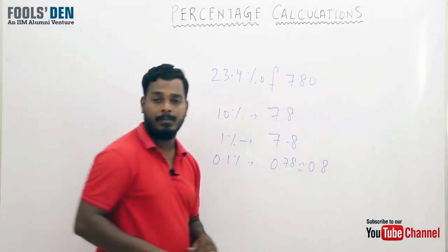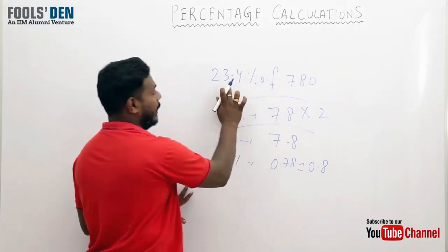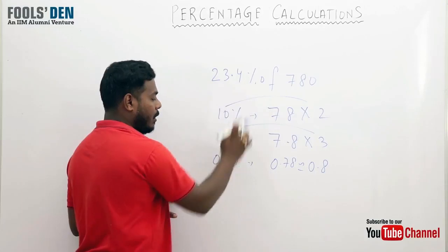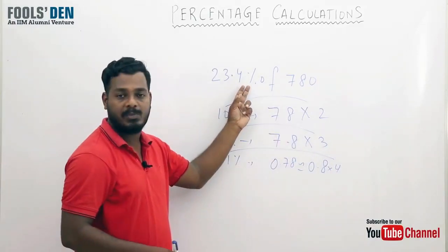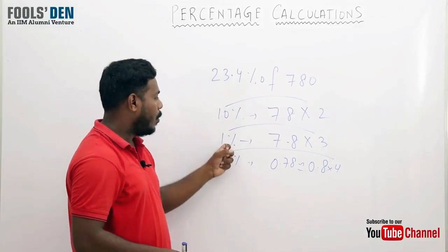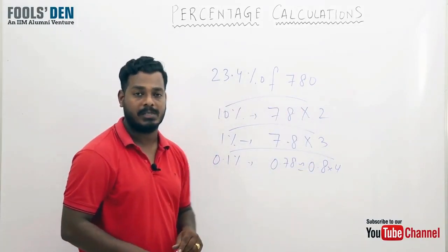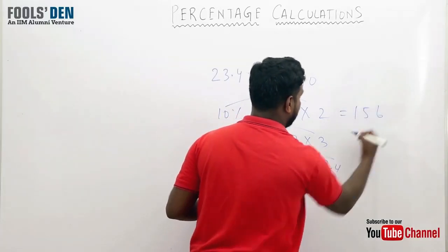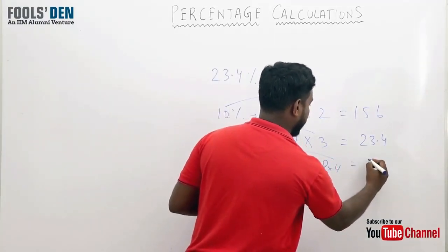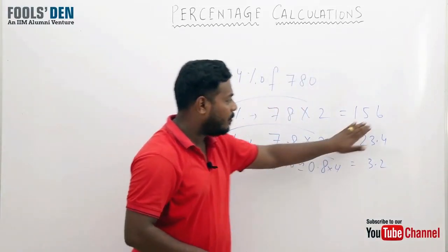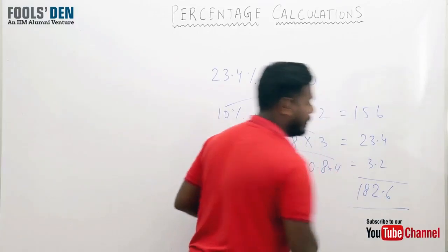Now how to get 23.4? We'll take 10 twice, 1 three times, and see how to make 0.4 - if we take 0.1 four times, then 0.1 into 4 is 0.4. So we can make even this small percentage. 10 twice is 20, 1 three times is 3, and 0.1 four times is 0.4. If I add them all, I'll get the value of 23.4 percent. Let's see quickly - this is 156, this is 23.4, and this value is 3.2. If you add these, 156 plus 23 is 179 plus 3 is 182, so the value would be 182.6.